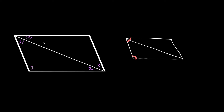Going back to this problem, the whole angle plus this whole angle are supplementary — they should add up to 180 degrees. This angle up here is 81 plus 28, which equals 109 degrees. So this whole angle is 109 degrees, and that's supplementary with the one below. If this is 109, then the angle down here — angle 1 — must be 71 degrees.